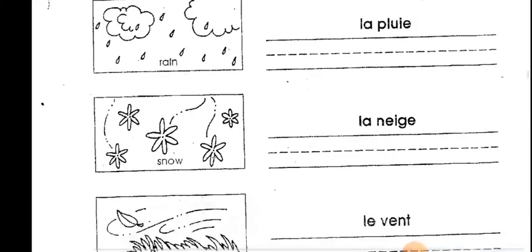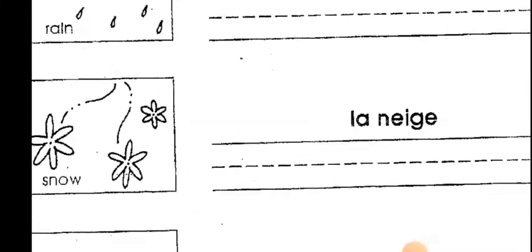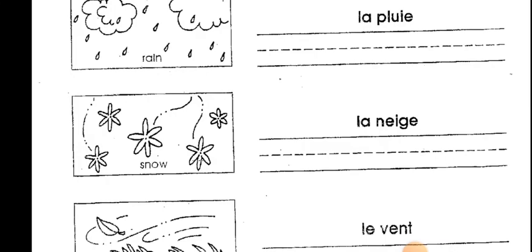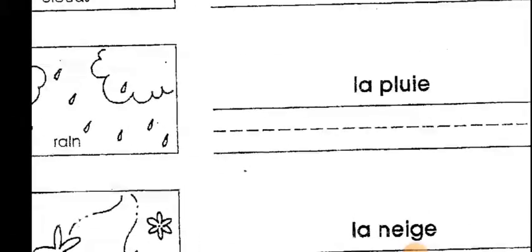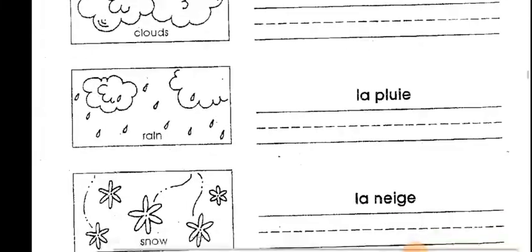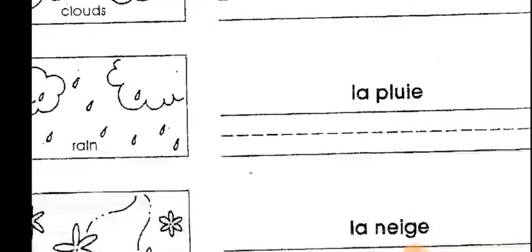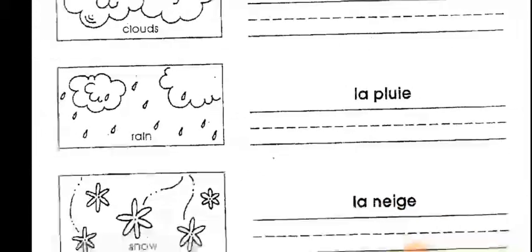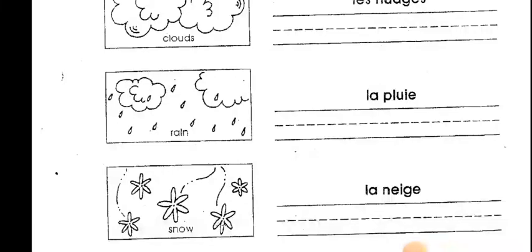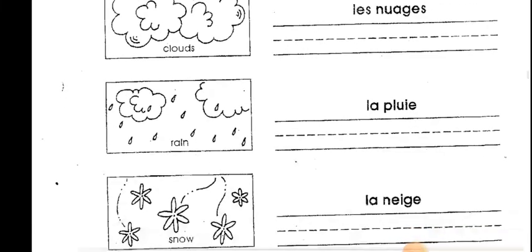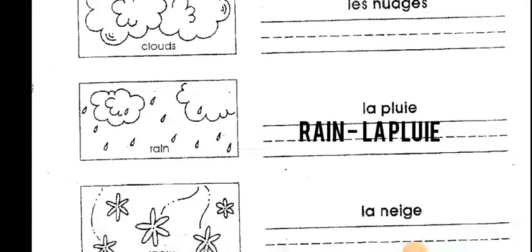When we want to say it is snowy, we say il neige. Il neige — we saw that. When we want to say it is rainy, il pleut. So you see that the verb is a little different from the word we actually have here. But whenever we ask you how we call the rain, this is the word we're expecting you to use: la pluie.